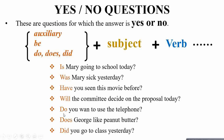Do you want to use the telephone? 'Do' is the auxiliary, 'you' is the subject, 'want' is the verb, and the rest is the complement. Does George like peanut butter? 'George' is a singular subject, so we use 'does'. 'You' is a plural subject, so it is 'do'. Did you go to class yesterday? 'Yesterday' refers to the past tense, but after DID you always use the simple form of the verb.